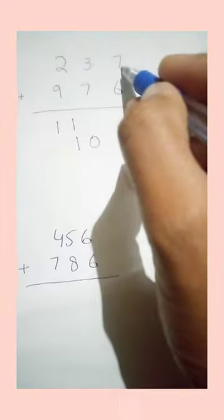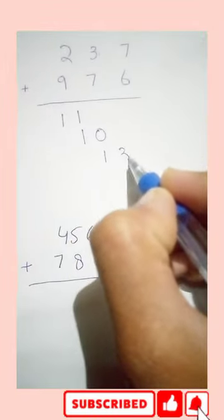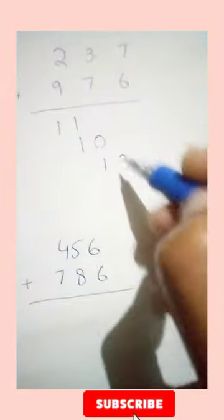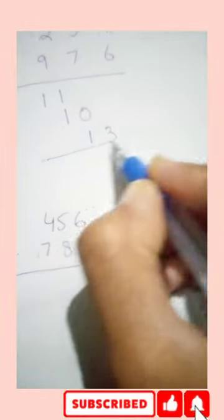7 plus 6, 13. So you can write this way, I can write this way.